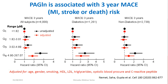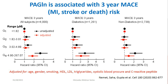We decided to further investigate the effects of phenylacetylglutamine on platelets and interaction with vascular matrix. We first looked at platelet adhesion to a collagen surface under physiological shear flow. For that, we used microfluidic chips coated with collagen. Blood was pretreated with vehicle — in this case saline — or phenylacetylglutamine at two different concentrations, and that whole blood was perfused over the chips under physiological shear flow. As you can see from the representative images and the quantification, phenylacetylglutamine pretreatment substantially accelerates the rate of collagen-dependent platelet adhesion.